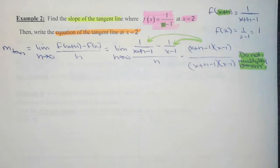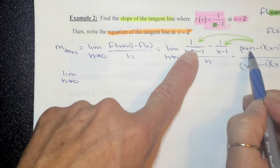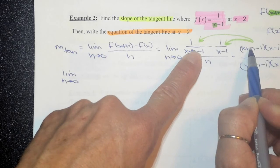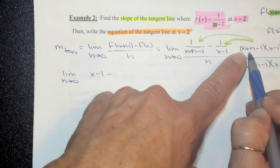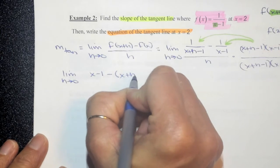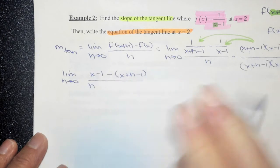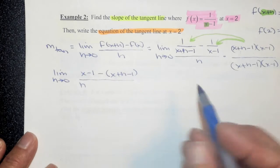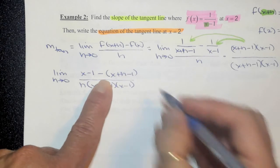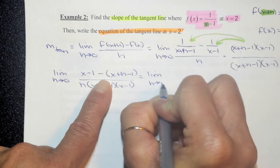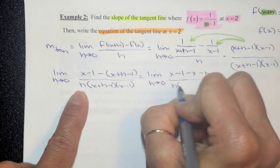Distributing the LCD to each fraction: when I distribute to the first fraction, the x plus h minus 1 factors cancel, leaving x minus 1. When I distribute to the second fraction, the x minus 1 factors cancel, leaving x plus h minus 1. This is all over the denominator x plus h minus 1 times x minus 1. Now I distribute the negative sign in the numerator: x minus 1 minus x minus h plus 1.